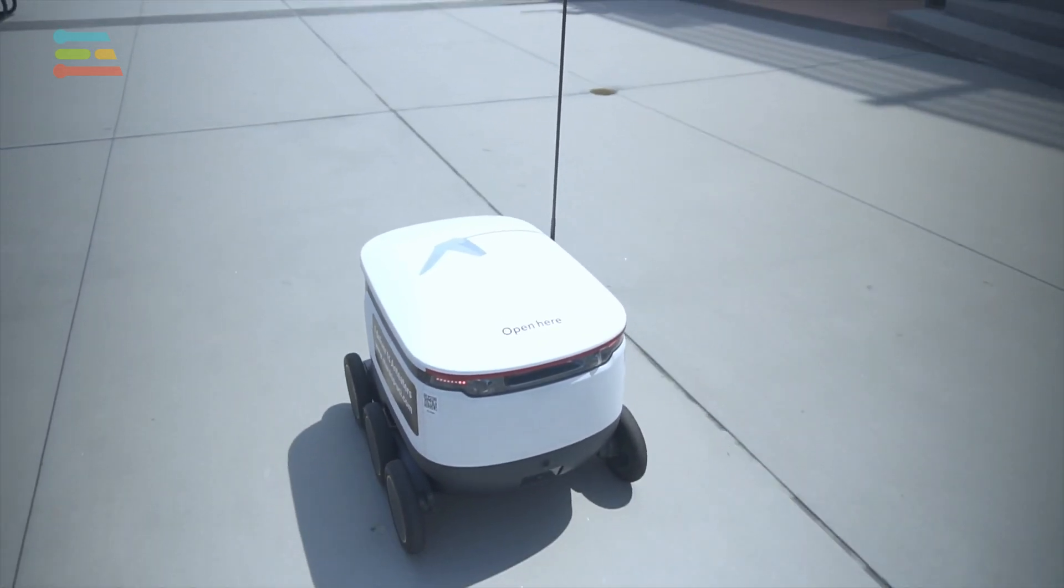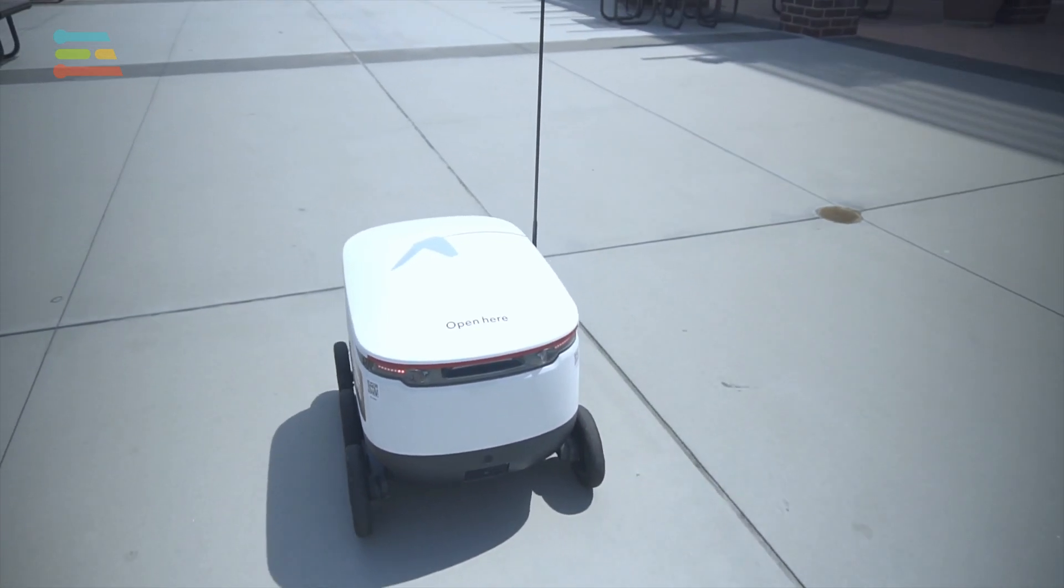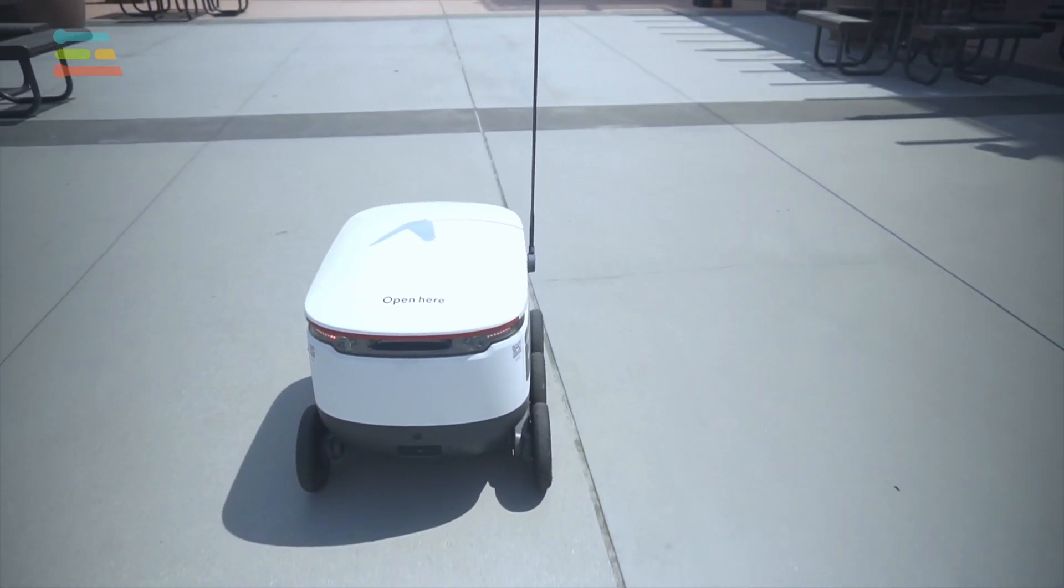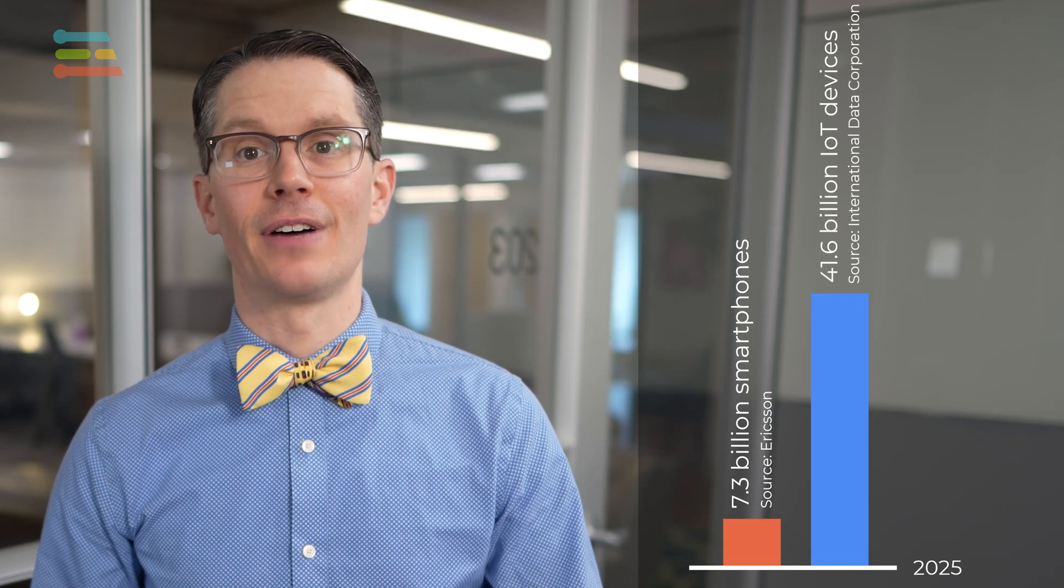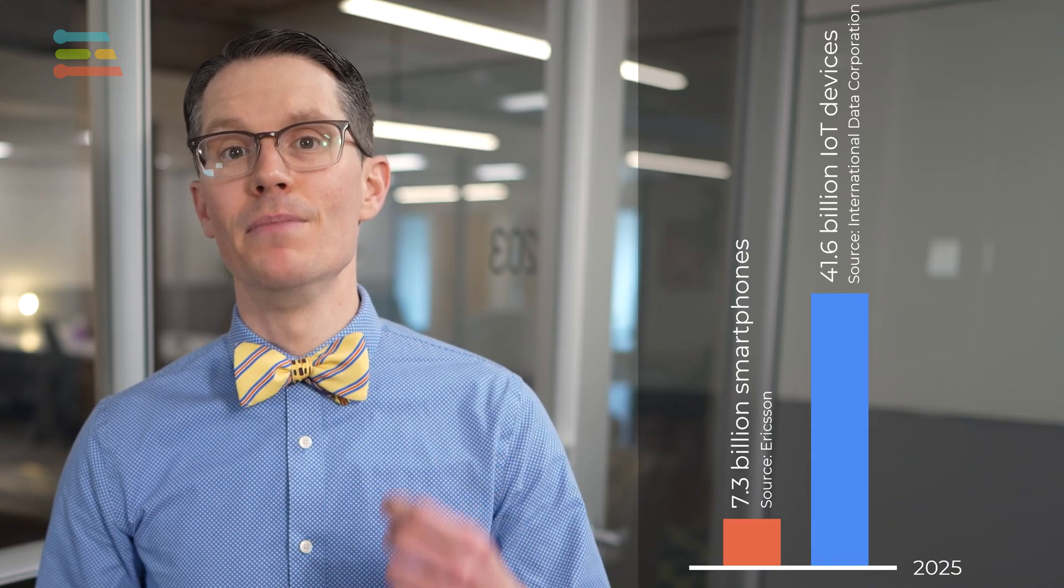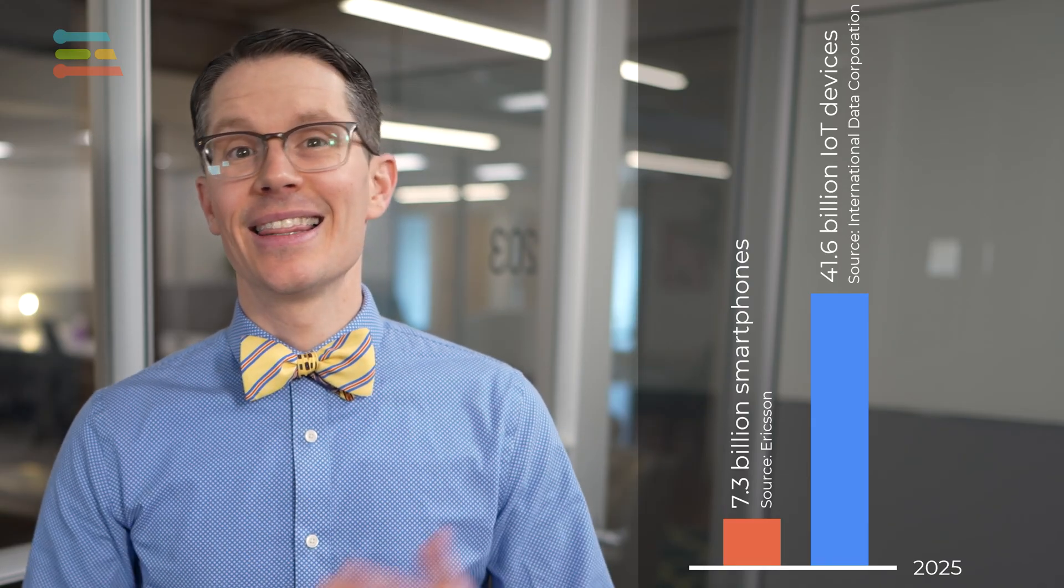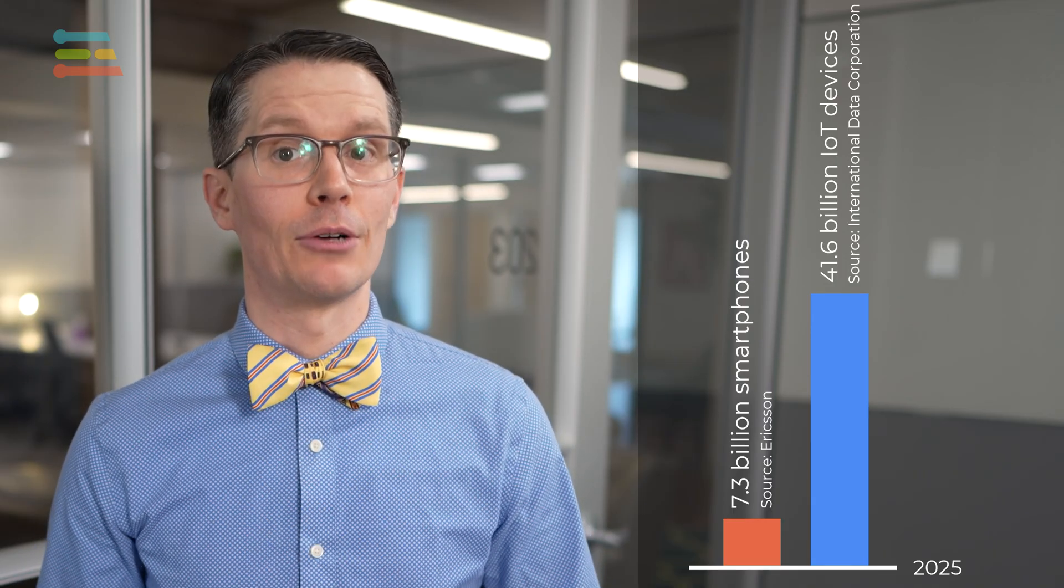Autonomous vehicles and robots can't assume a stable internet connection, so most of the processing must be done on the vehicle itself. While Ericsson predicts there will be 7.3 billion smartphones in the world by 2025, IDC estimates there will be some 41.6 billion IoT devices producing 200 million terabytes per day. That's a lot of data to transmit through the network if we have to rely on cloud computing.